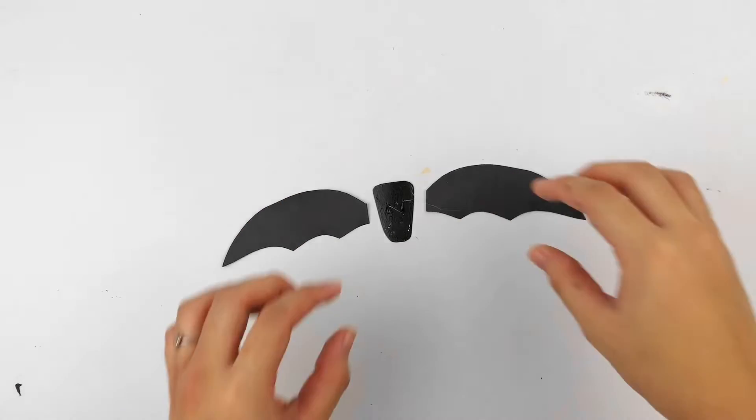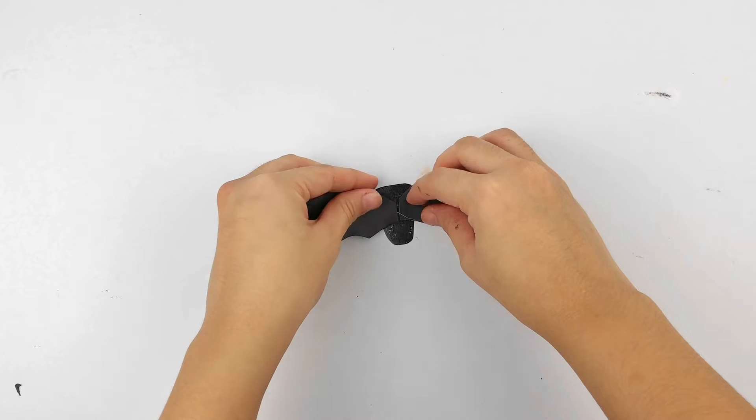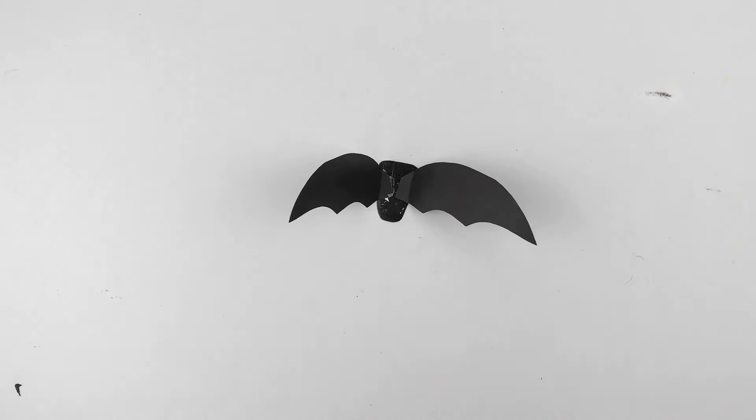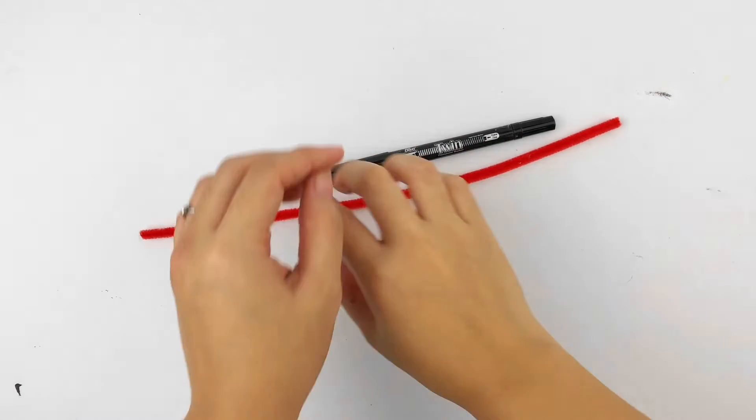Now it's time to glue those bat wings onto that bat body. You can use hot glue, craft glue, whatever. Then add some googly eyes and a little tiny smile that you cut out of a scrap piece of white paper.